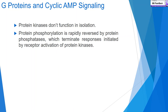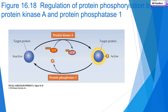Protein kinases don't function in isolation. Protein phosphorylation is rapidly reversed by protein phosphatases, which terminate responses initiated by receptor activation. This regulation of protein phosphorylation by protein kinase A and protein phosphatase follows the same on-and-off mechanism shown in the first slide.